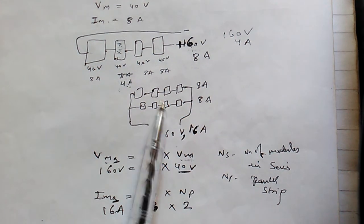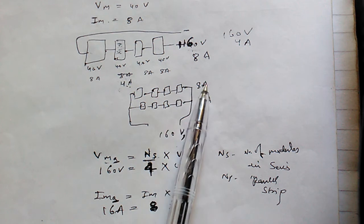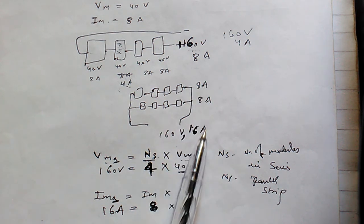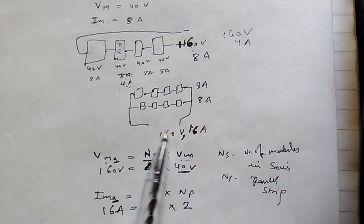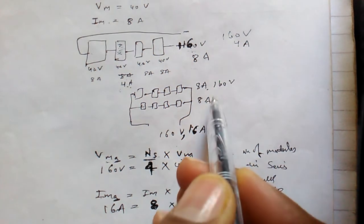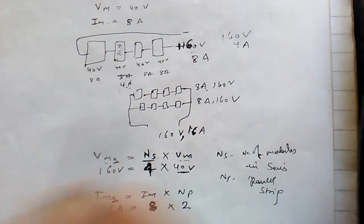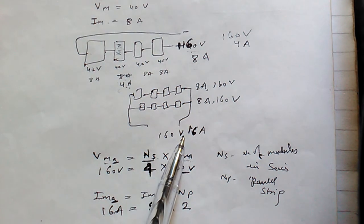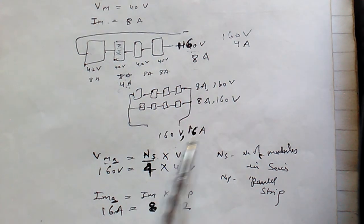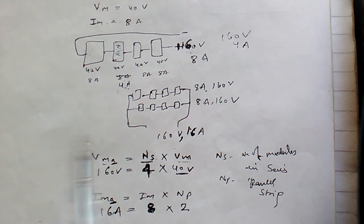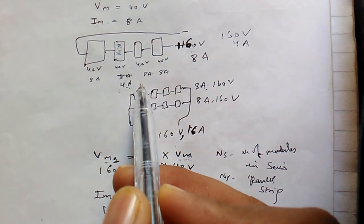In a parallel example, if one string gives 8 ampere and another also gives 8 ampere, the total output current is 16 ampere. Voltage stays the same — both strings give 160 volts — so the parallel output is 160 volts and 16 ampere, since current adds in parallel.